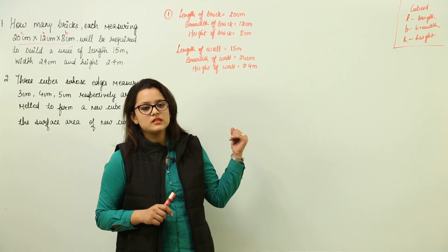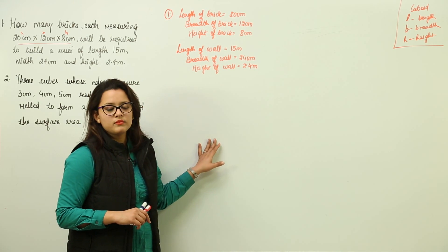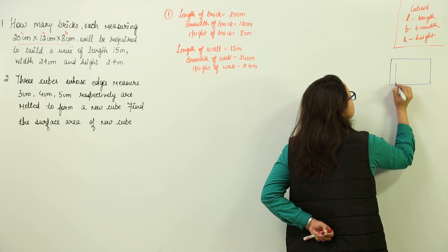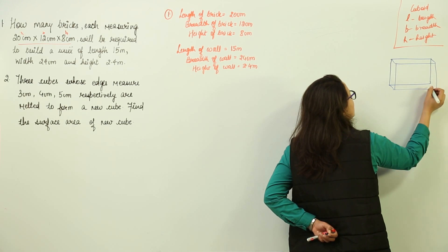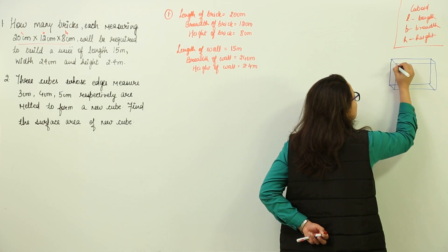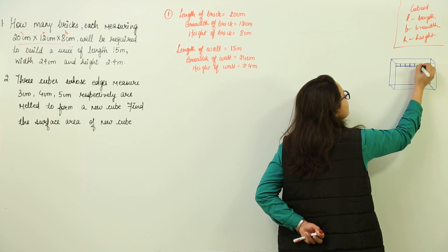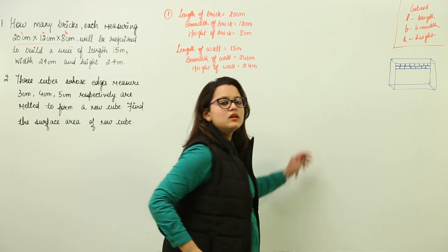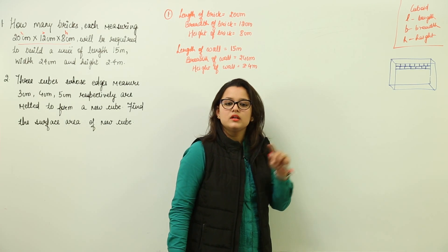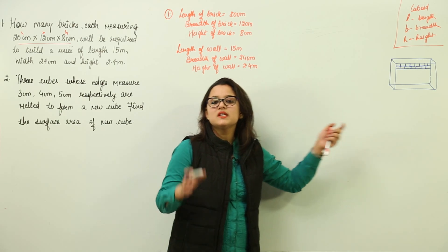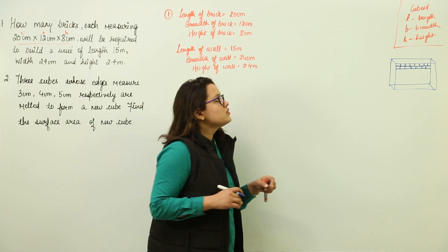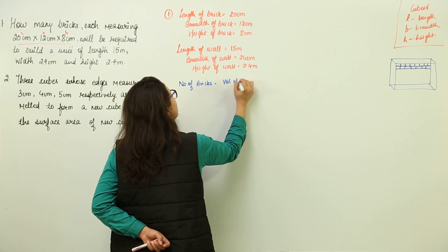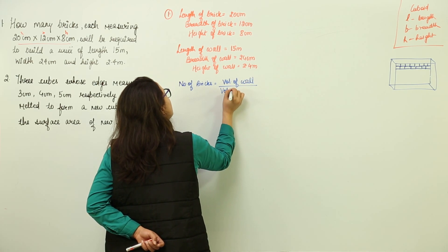The concept being used here is that the wall to be built is cuboidal in shape, having some length, breadth, and height. This cuboidal wall has some volume. The total volume is divided into small parts — these parts represent the bricks. So if you divide the total volume of the wall by the volume of one brick, you get how many bricks are required to make this wall.